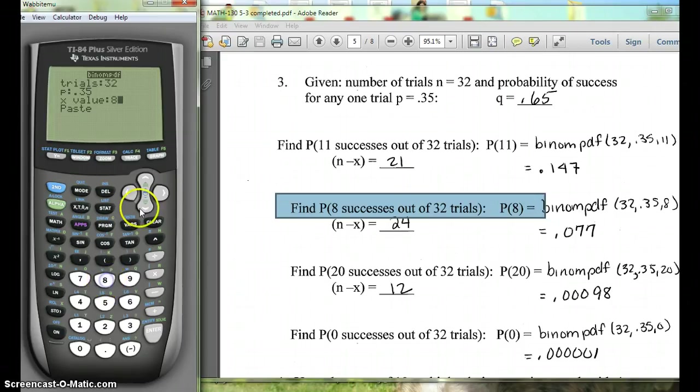So we'll clear this and put 8, choose paste. So again, if you didn't have that special little screen, put 32, comma, 0.35, comma, 8, and enter, and it gives us our binomial probability.